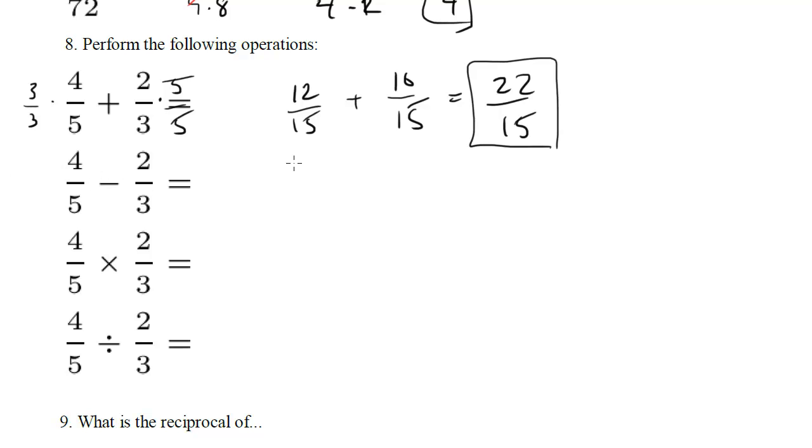Same thing for this one, right, so in this case we're subtracting, so we're going to get 12 fifteenths minus 10 fifteenths, so this should be 2 fifteenths.